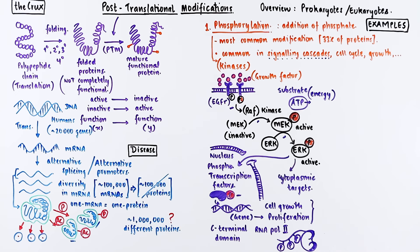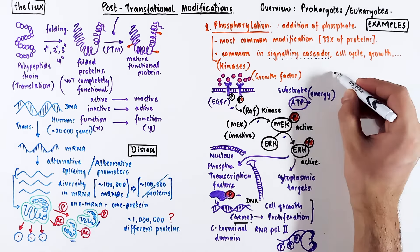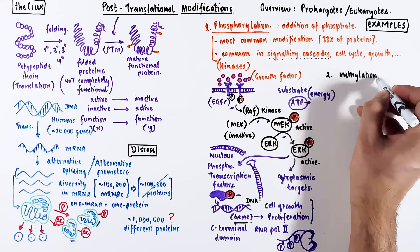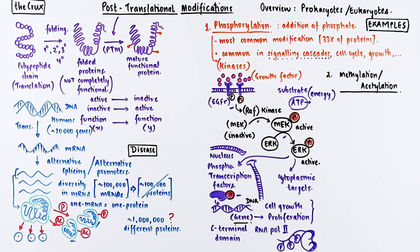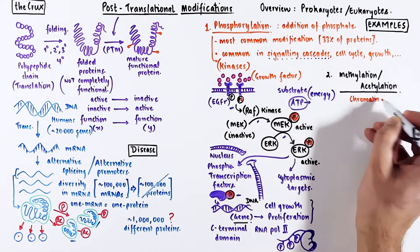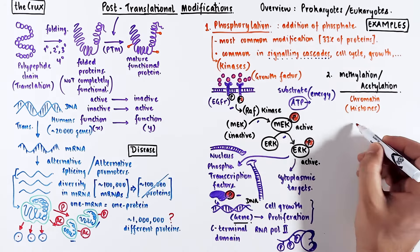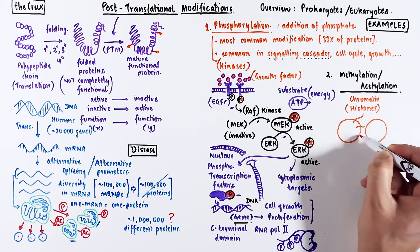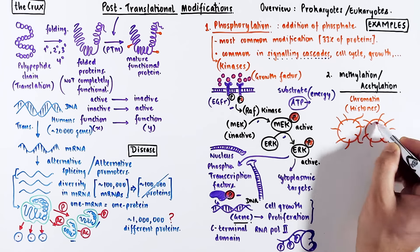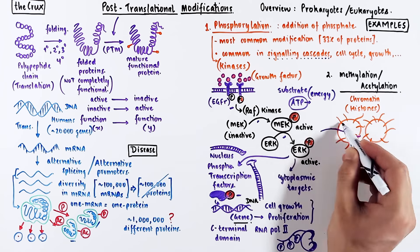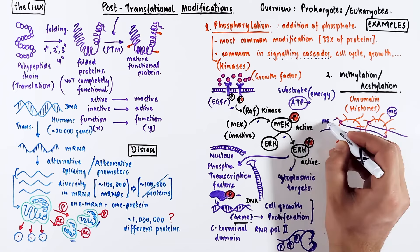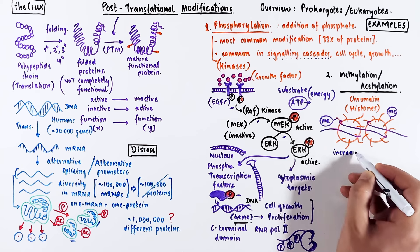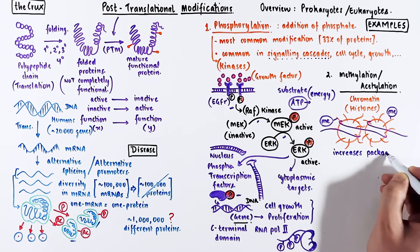Since we're on the topic of transcription factors and DNA, let's talk about methylation and acetylation, where the modification results in functional group transfer—either methyl or acetyl group. This is the most common modification in histones, which are proteins that make up chromatin. In chromatin, DNA is wrapped around histones. Generally speaking, if histones are methylated, DNA packaging increases and DNA cannot be accessed.